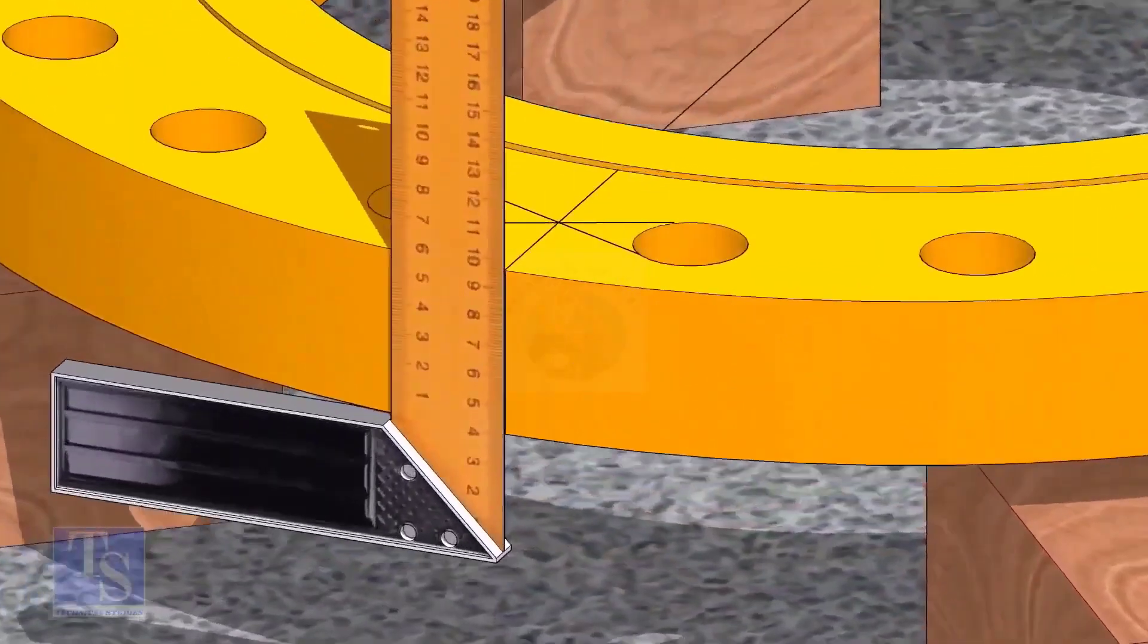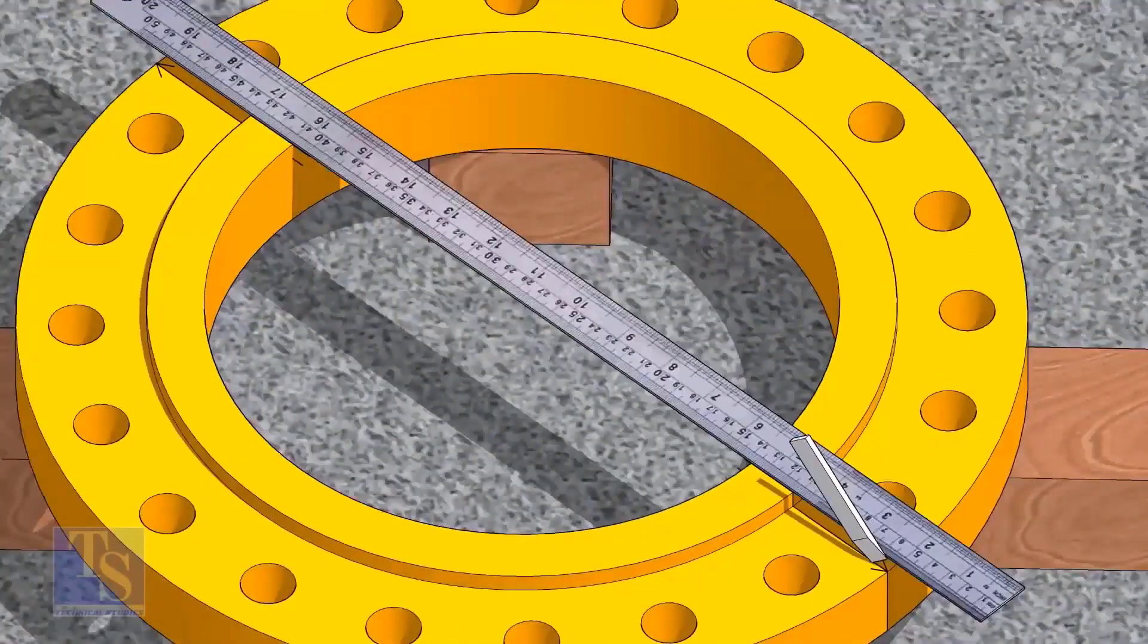Now, transfer the center line to the sides of the flange. Overturn the flange and transfer the center line on the back side of the flange.